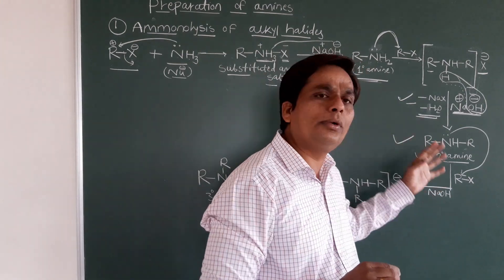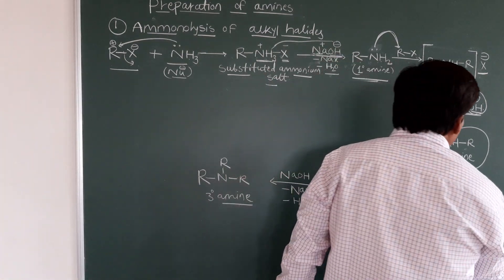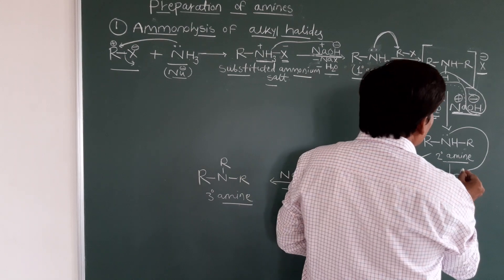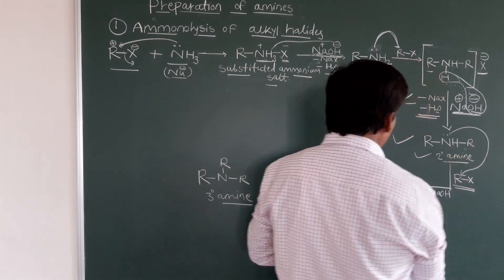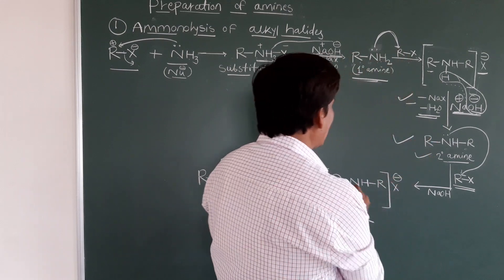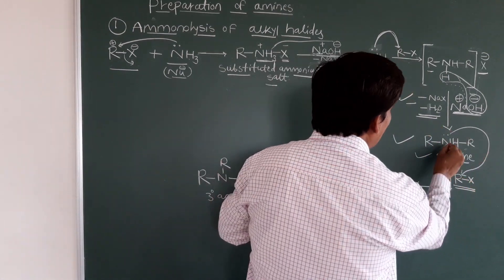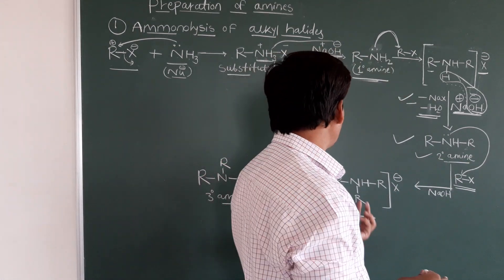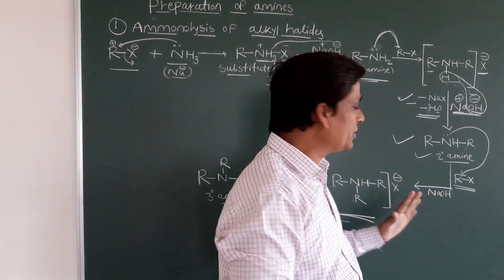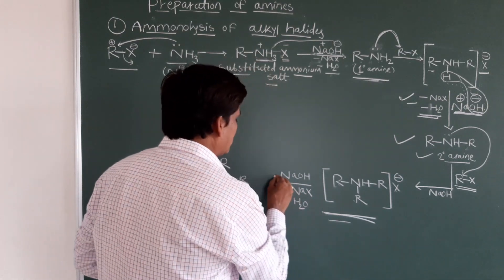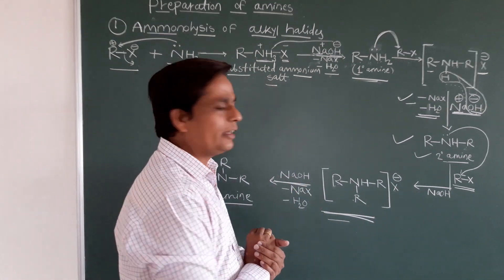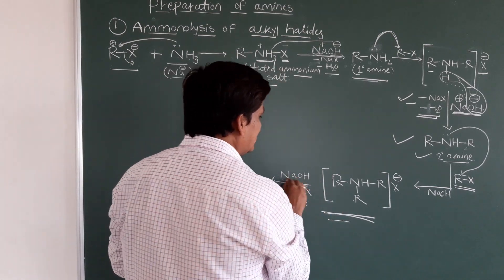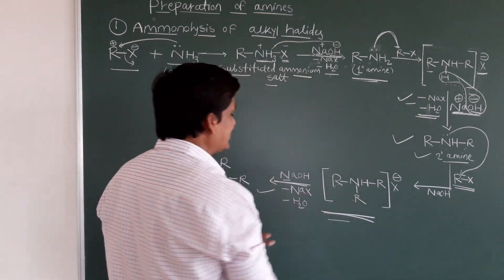Using secondary amine, we can prepare the tertiary amine. We take another alkyl halide molecule RX and go through the same procedure. The nucleophile attacks, and we get an intermediate product R–N(R)–R with X outside. This intermediate is treated with NaOH, and NaX is removed.